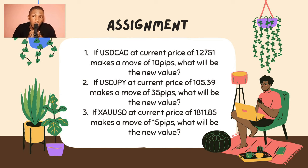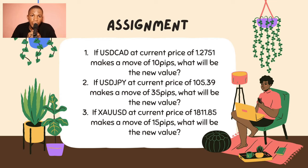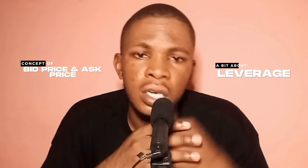Take note: in all the examples we considered, pips were only added to the current values — that was just for teaching purposes. In reality, if price makes a move it can be addition or subtraction depending on the direction. Pips are added when you are going long (buying); pips are subtracted when you are going short (selling). In assignments 1, 2, and 3, please add pips. With practice this becomes easy. I hope you now have a good grasp of what a pip means and how to calculate currency pair values. These are foundational steps for your forex trading career. Next, we discuss the bid price, ask price, and a bit about leverage — see you in the next video.